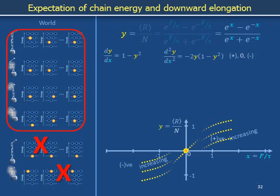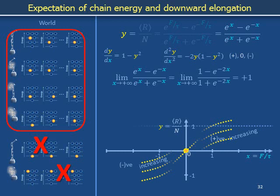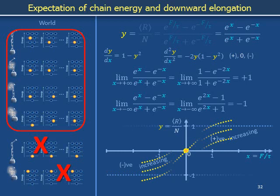Finally, we look at the behavior of y on x for arbitrarily positive and arbitrarily negative values of x. Does a limit exist for y as x becomes arbitrarily positive? Dividing numerator and denominator by a factor of e to the x reveals exponentials that become arbitrarily small in magnitude relative to unity as x takes on arbitrarily large positive values. The quotient becomes arbitrarily close to the ratio 1 over 1, so the limit as x goes to positive infinity of y on x exists and it is plus 1. Does a limit exist for y as x becomes arbitrarily negative? The quotient becomes arbitrarily close to the ratio negative 1 over 1, so the limit as x goes to minus infinity of y on x exists and it is negative 1.